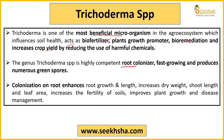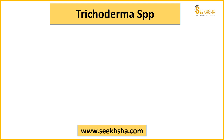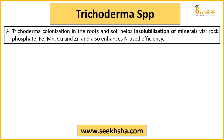Root colonization by Trichoderma helps increase root growth and length, increases plant dry weight, increases shoot length, increases leaf area, improves soil fertility, and helps in disease management. Additionally, it helps in the solubilization of soil minerals like phosphate, iron, manganese, copper, and zinc, making them easily absorbable by the plant. It also improves nitrogen use efficiency in the soil.